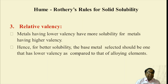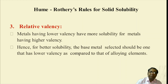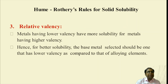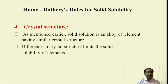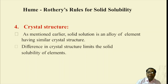In general, alloying elements located closer in the periodic table have higher solid solubility because there is not much difference in their electronegativity values. The third factor is relative valency. Metals having lower valency have more solubility for metals having higher valency. For better solubility, the base metal selected should have lower valency compared to the alloying elements. The fourth factor is crystal structure — elements must have similar crystal structures for solid solubility, as differences in crystal structure limit solid solubility.